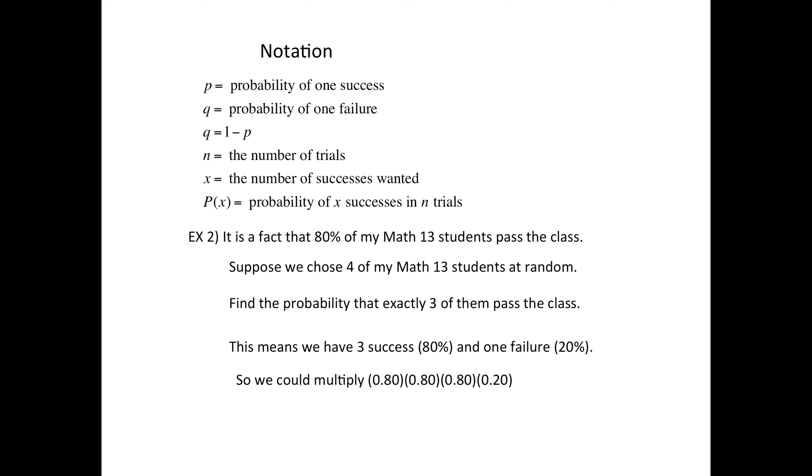So there's an 80% chance for success, and I'm going to have three successes. 20% chance for a student not to pass, and we're going to have one of those. So we could multiply. So as you can see here, we've got a success, a success, and a success, and a failure. And since the word and is in there, we are multiplying.